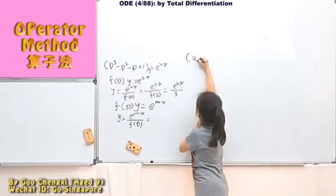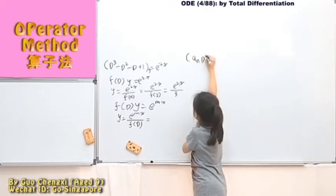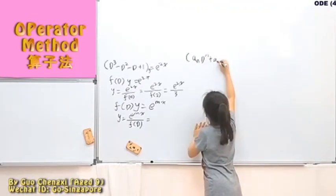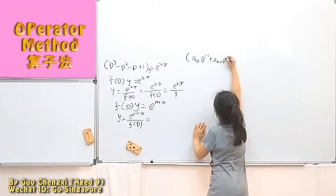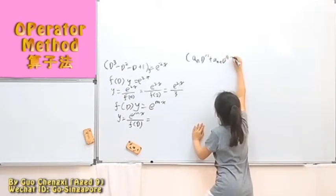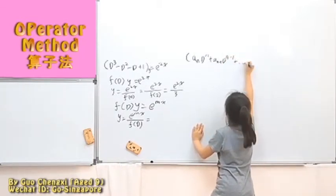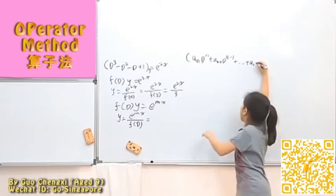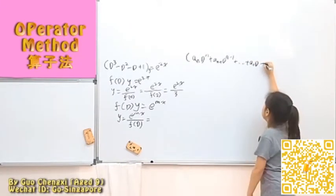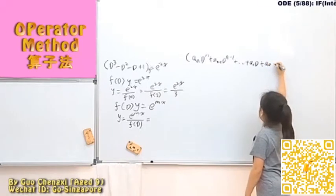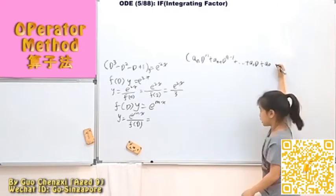So we'll just get a_n D to the power of M plus a_(n-1) D to the power of M-1, and keep adding to a_1 times D plus a_0. Here, D to the power of 0 is just 1.